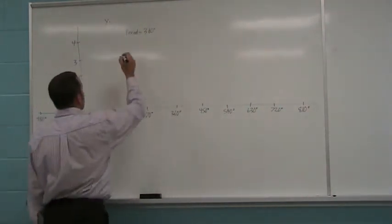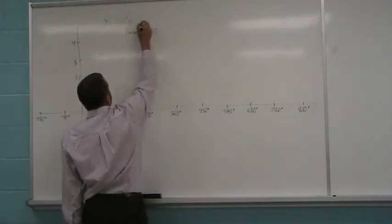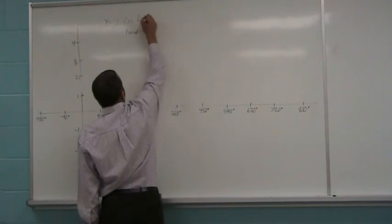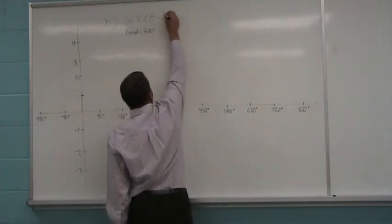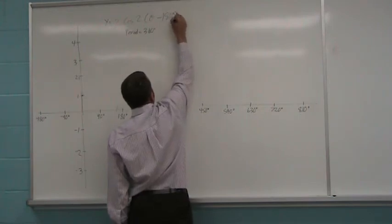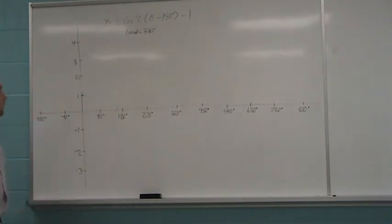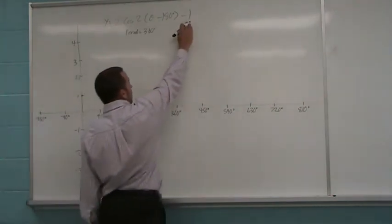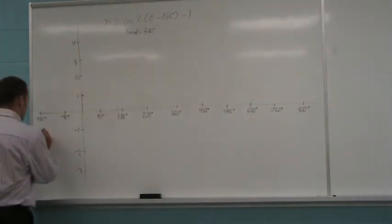All right, let's try this time. I equals 2 onto the cos of 2 theta minus 180 degrees subtract 1. All right, and again, quickly the same process. I'm at negative 1 here. So that's my sinusoidal axis. Draw that in.